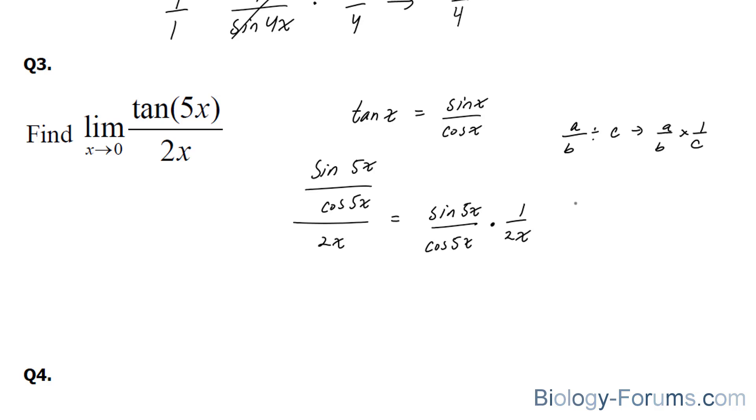And what we're going to do next is multiply the top and the bottom by 5x. If I multiply the top and the bottom by 5x, what I end up with is sine 5x, and I'm going to take this 5x and put it underneath here, times 5x over 2x. And remember, we still have this cosine, 1 over cosine 5x.